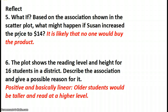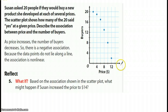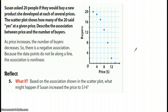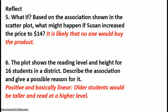Okay, so here we go. Based on the association shown in the scatter plot, what do you think would happen if Susan increased her price? Well, if we go to 12 and then to 14 on the axis, I would see no one buying. I think that's what the author is going to conclude — that it is likely that no one would buy the product.